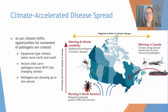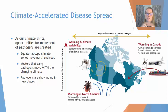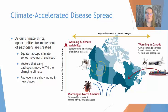Climate change is also accelerating disease spread. As our climate shifts, the environment suitable for many of these disease vectors is going to be changing. Many diseases associated with equatorial climates are starting to move north and south of the equator, meaning the vectors are moving with that changing environment and we're seeing these diseases appearing in new areas.